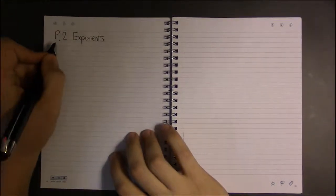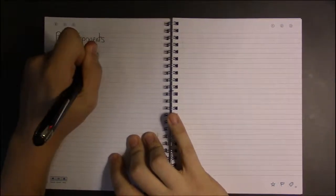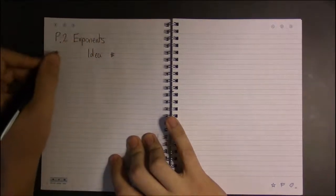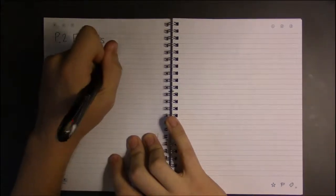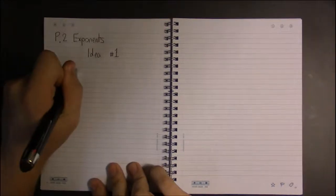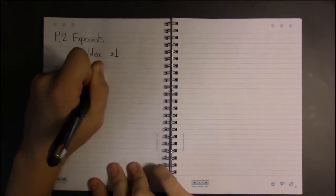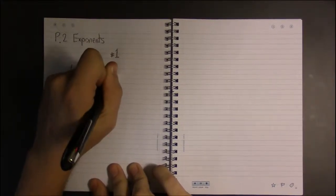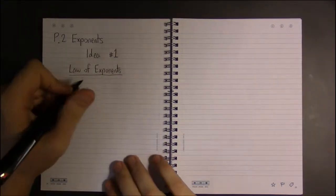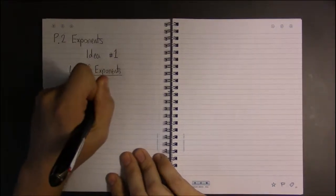Alright, we're in section P2, still talking about exponents. In this video we're going to be talking about the ideas needed to get through the homework in this section. Now some of the ideas you'll use most frequently are known as the laws of exponents, and these are as follows. If we have a to the x times a to the y, that's the same thing as a to the x plus y.